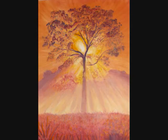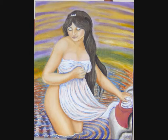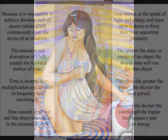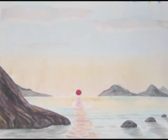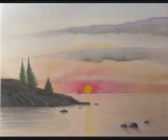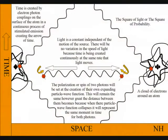I have often wondered why oil paintings of one colour look more dramatic. It could be because colours represent the position of space and time that artists find more difficult to represent. To put it very simply, time moves at the speed of light, and energy and mass slow it down to form their own space-time geometry. The greater the mass or energy, the slower time will run. Because time is expanding at the same rate that light moves, light itself is a universal constant, independent of the motion of the source.